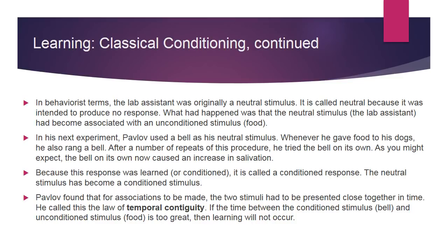Pavlov showed this by presenting a dog with a bowl of food and measuring salivary secretions. When he discovered that any object or event the dogs learned to associate with food — such as the lab assistant — would trigger the same response, he realized he had made an important scientific discovery. In behaviorist terms, the lab assistant was originally a neutral stimulus, intended to produce no response. The neutral stimulus had become associated with an unconditioned stimulus — the food. In his next experiment, Pavlov used a bell as his neutral stimulus, ringing it whenever he gave food to his dogs. After a number of repeats, the bell on its own caused an increase in salivation — a conditioned response. The neutral stimulus had become a conditioned stimulus.